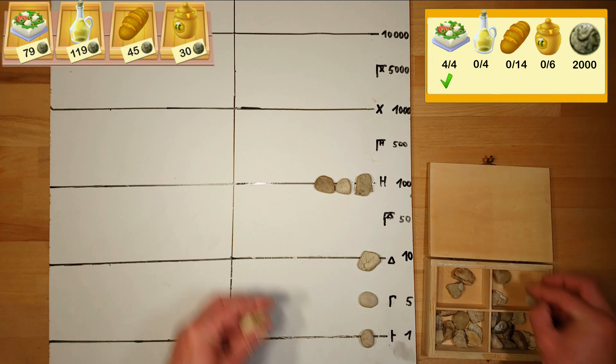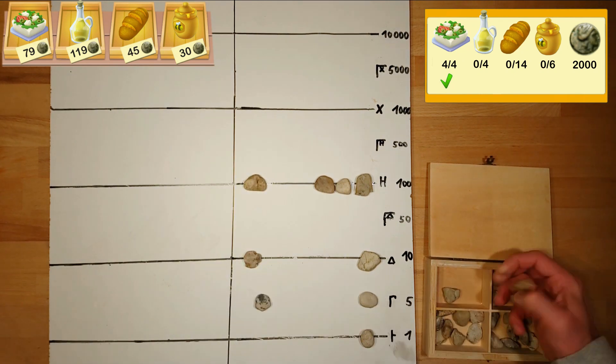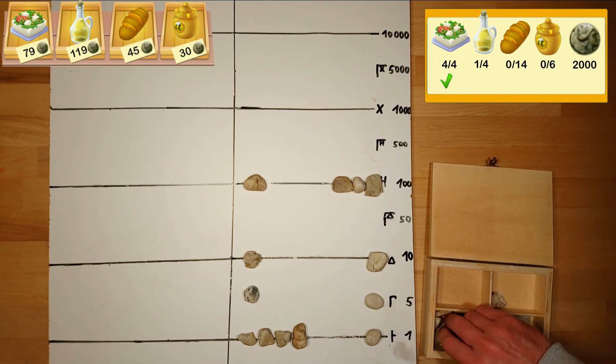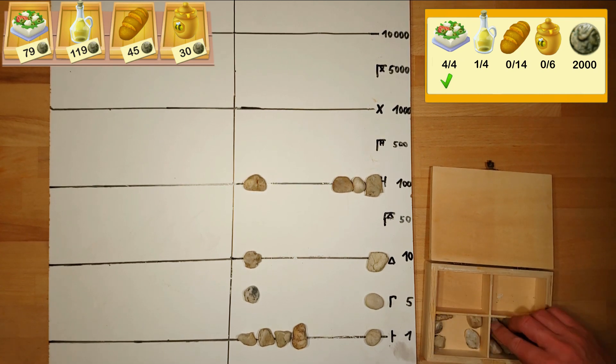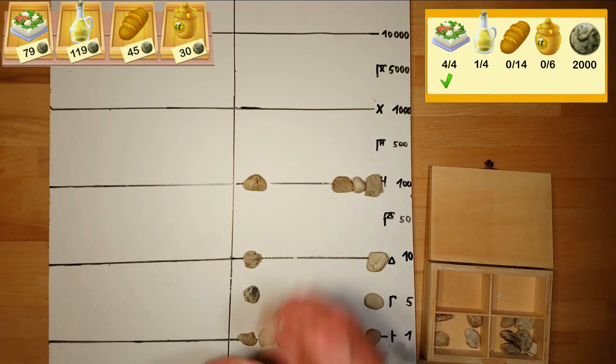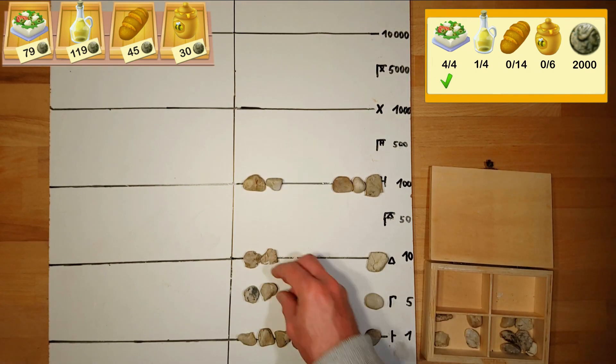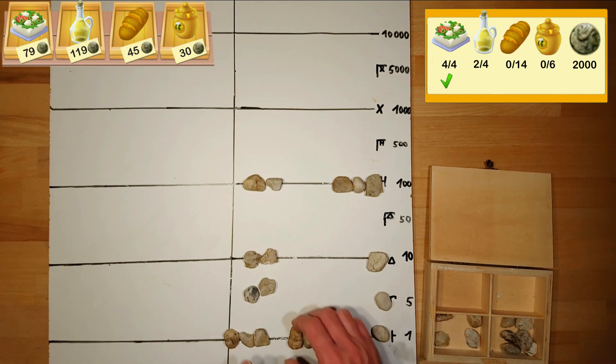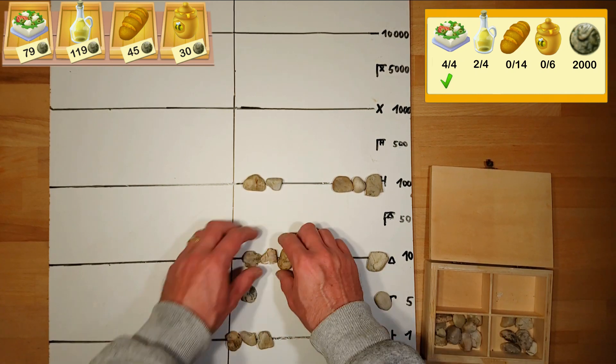Now we continue with one olive oil. It costs 119. Now we add the pebbles for the second olive oil. Then we sum up the price for the two olive oil on the left side of the board.